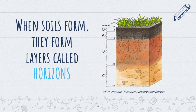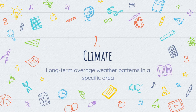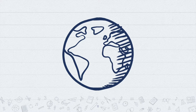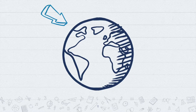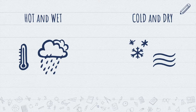One of these factors is climate. Climate is a word that describes the long-term average weather patterns in a specific area. Our world is very large, and the climate that occurs in one area is likely to be different than the climate that occurs in another. For instance, you could have a hot and wet climate, or a cold and dry one.